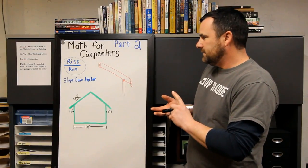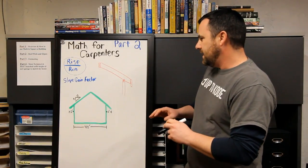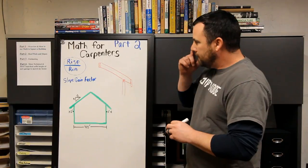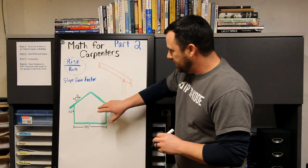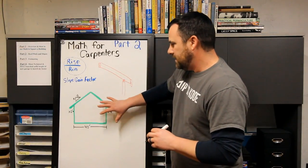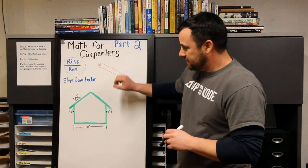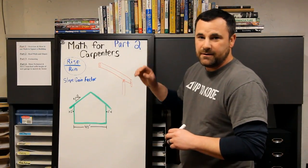But for now, just rise over run. So I got this little simple house, pretty much AutoCAD ready. You just plunk that into your computer and print it off.